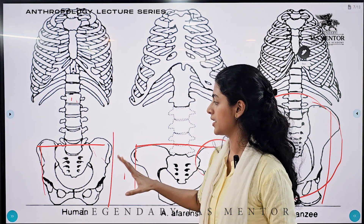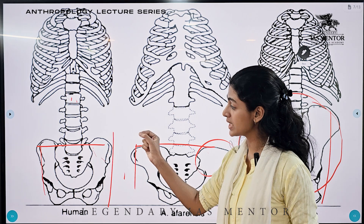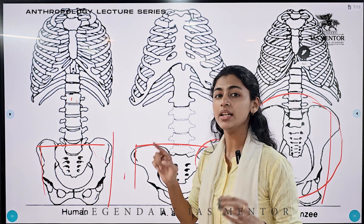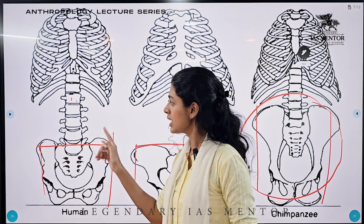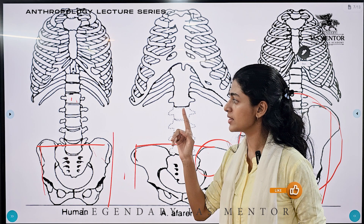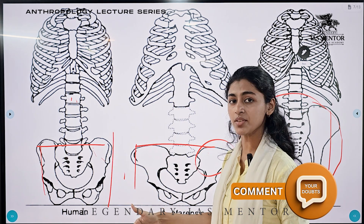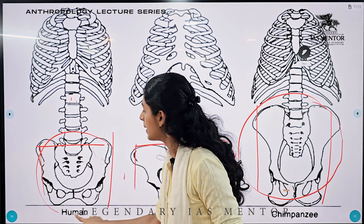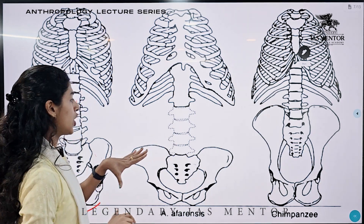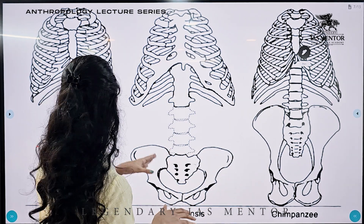This shape of our pelvic region supports our abdominal organs as well as shifts weight distribution to the hip region. Earlier, when knuckle walking was done by primates, the weight was distributed in the lower back, and primates walked in a slanting position. For us to walk upright and for weight to be effectively transmitted, the pelvic region became small and broad.